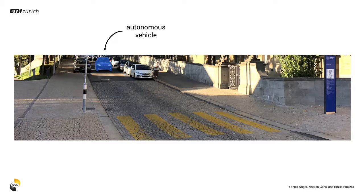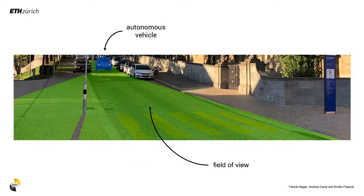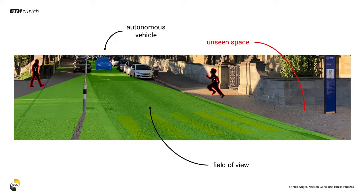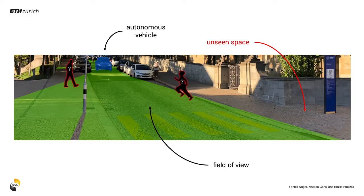Safe autonomous driving requires the ability to reason about not only what the vehicle sees, but also what could possibly exist beyond its sensing horizon. This paper describes an inference and motion planning pipeline that is able to guarantee passive safety with respect to hypothetical hidden agents that might suddenly appear.